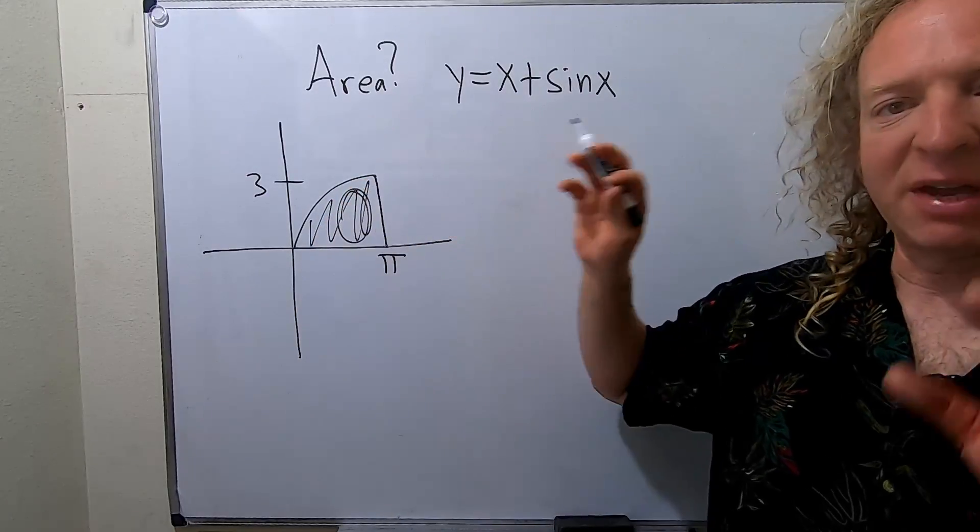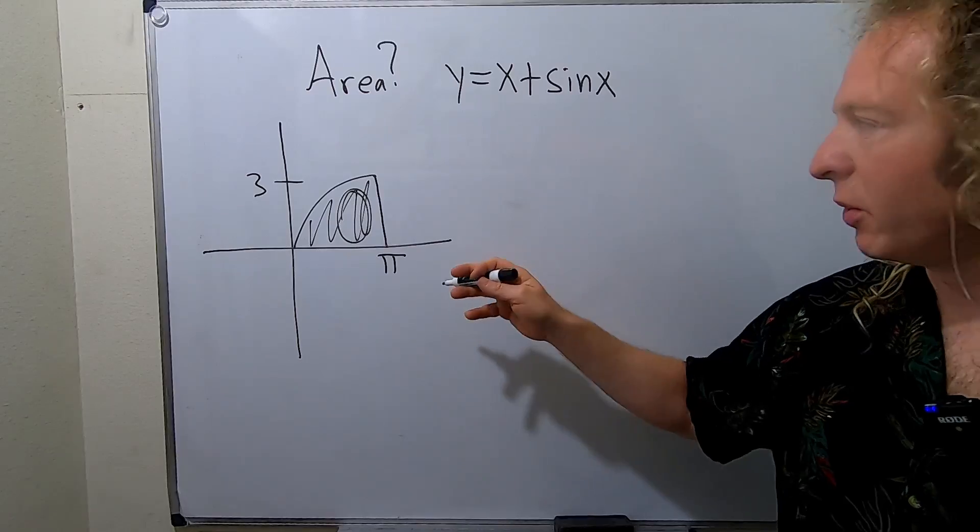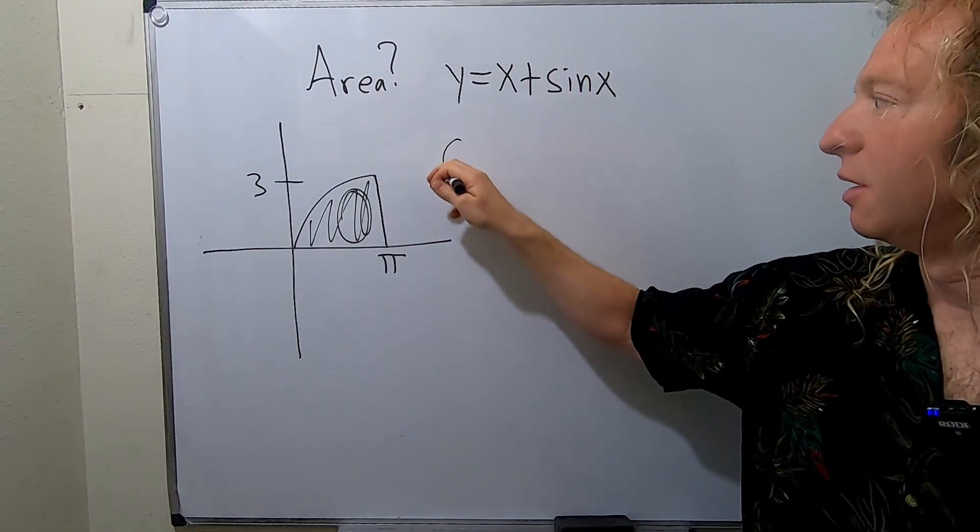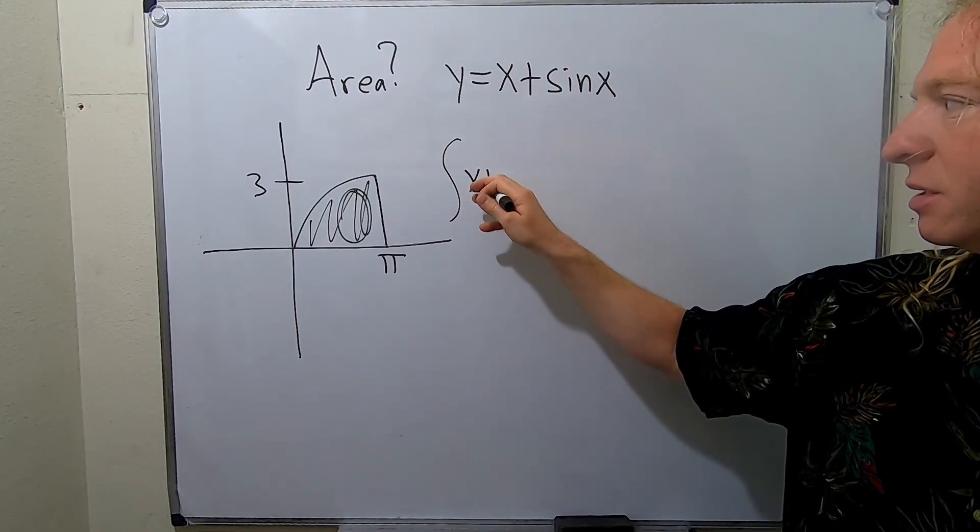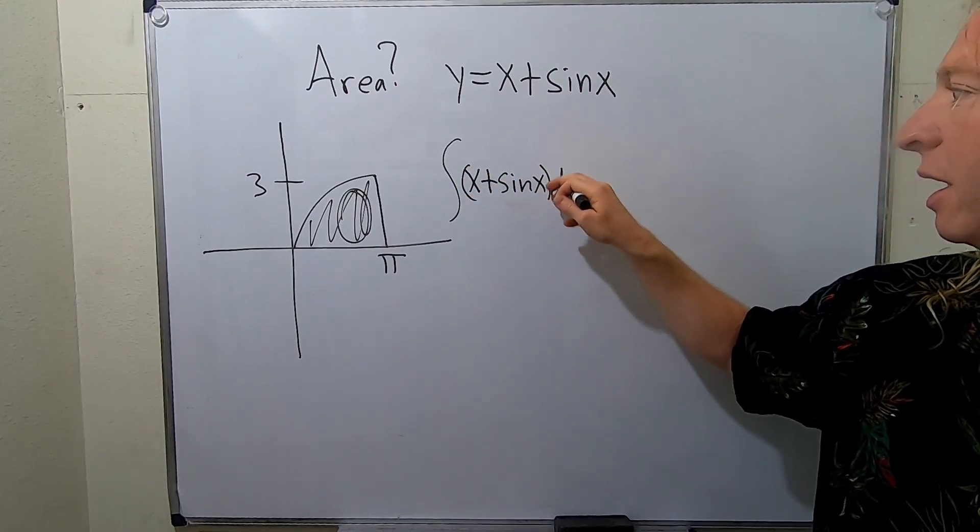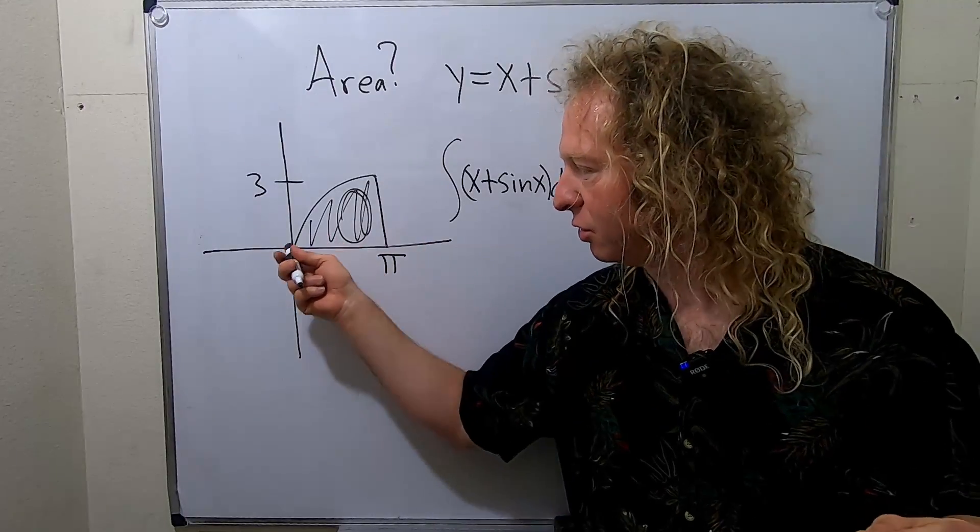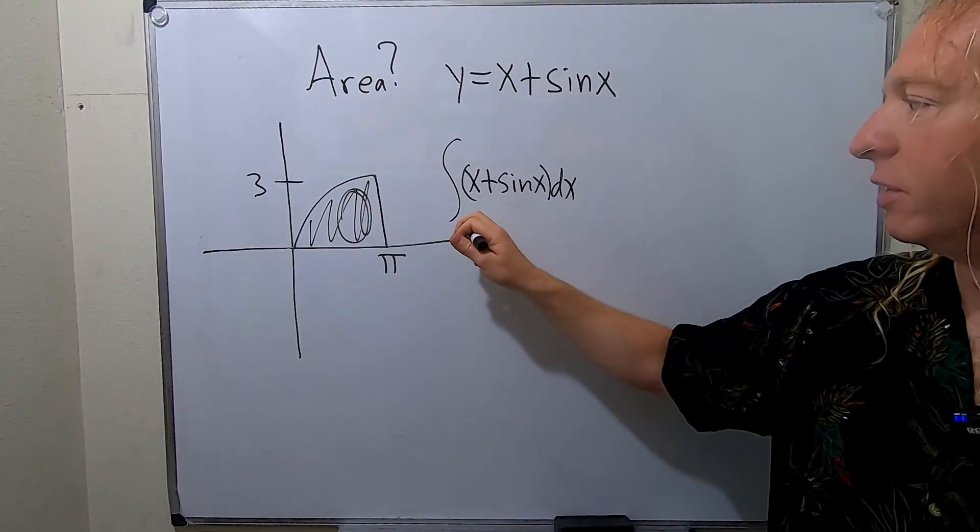This area is given by the definite integral from zero to pi. Basically all we have to do is integrate x plus sine x dx, and we have to go from zero to pi. We're integrating with respect to x so we have to use x's for our limits of integration.